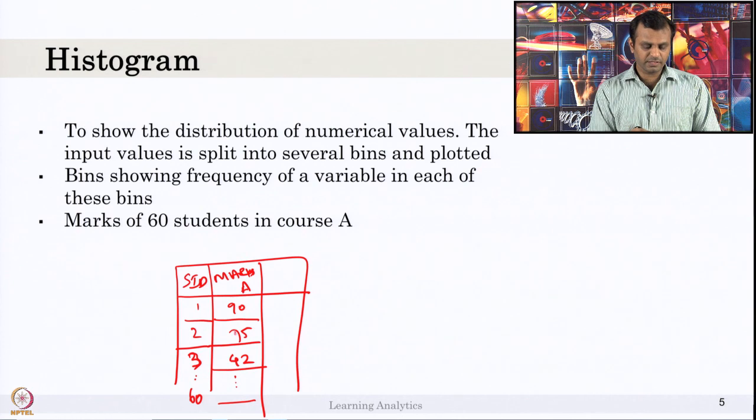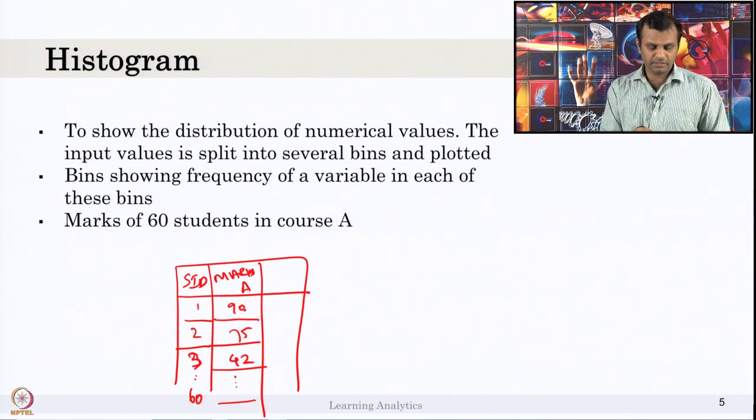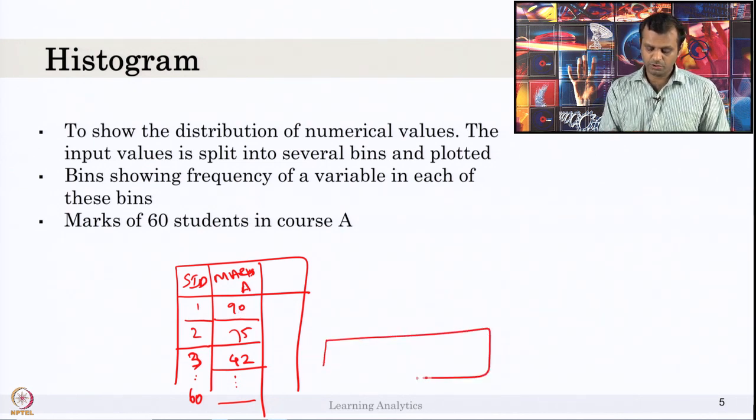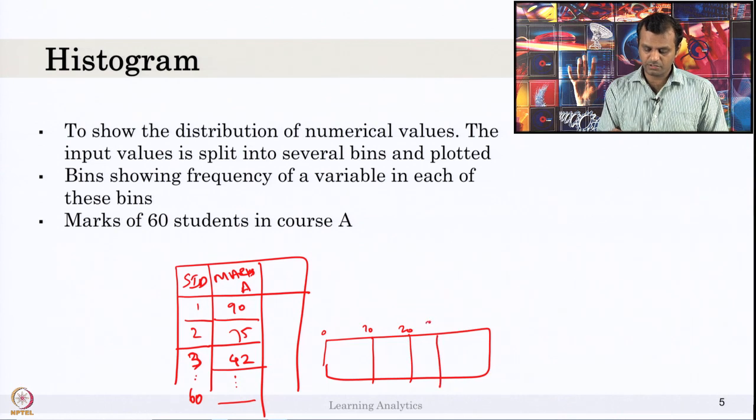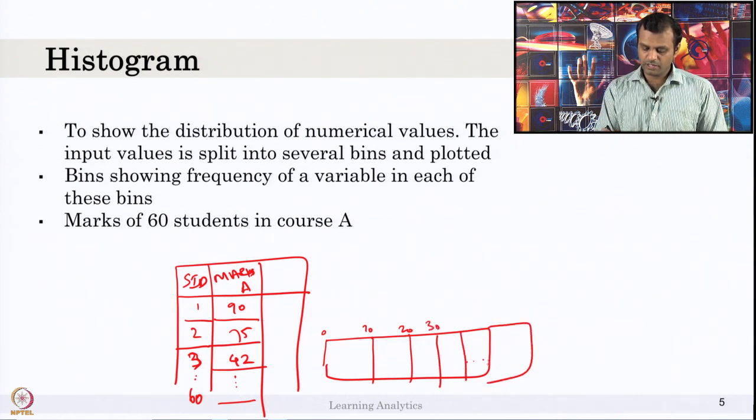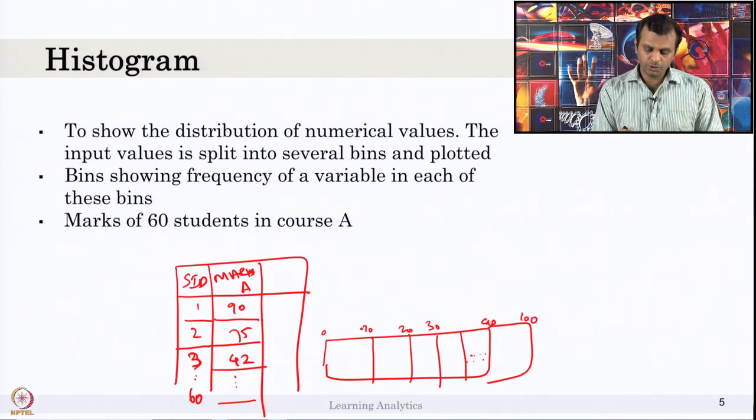What we have to do is split these scores into several bins. For example, consider the mark is out of 100. If the exam is for 100 marks, you can make several bins. Say, I want to know how many students got 0 to 10 marks, how many students got 10 to 20, and so on up to 90 to 100. You have to calculate how many students got marks from 0 to 10, say 7 students, 8 students, 10 students, and so on.